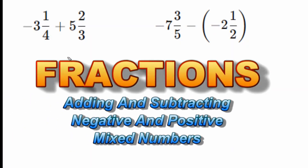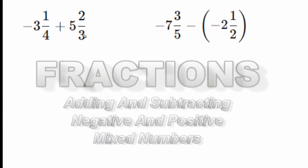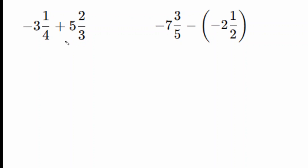This first problem, we have negative three and a quarter plus five and two thirds. Notice that we do not have like denominators, and our first term is negative and our second term is positive. Whenever you have signs that are opposite, you are going to subtract the absolute value of those two terms.